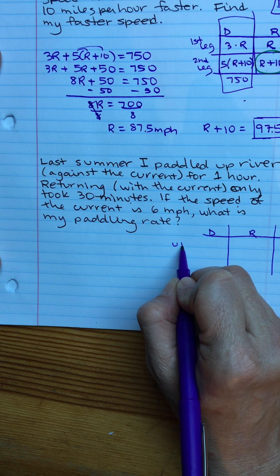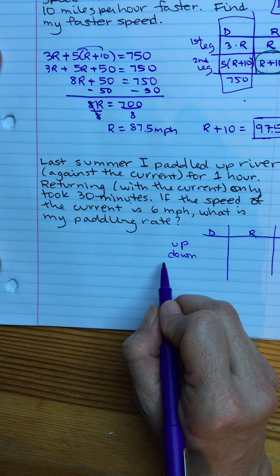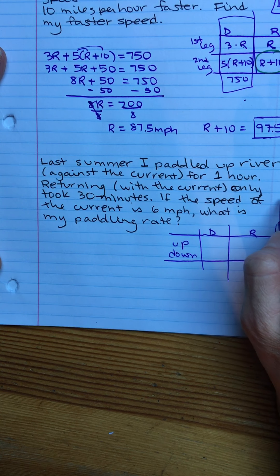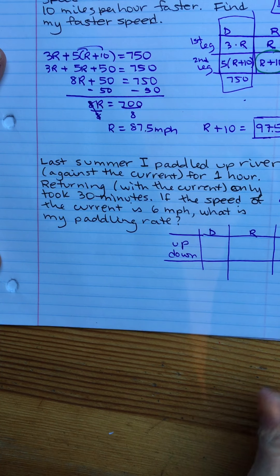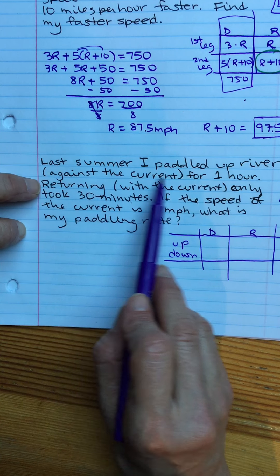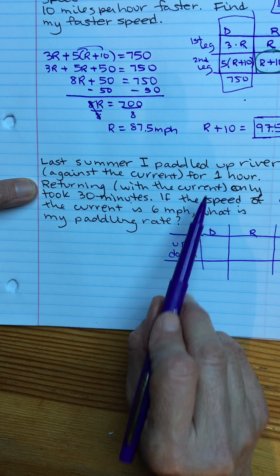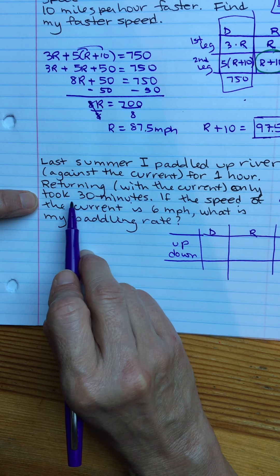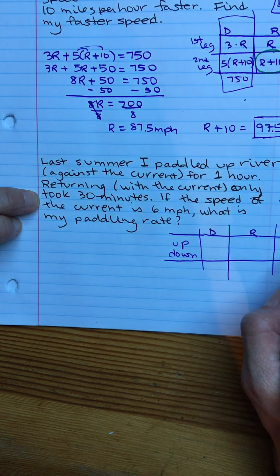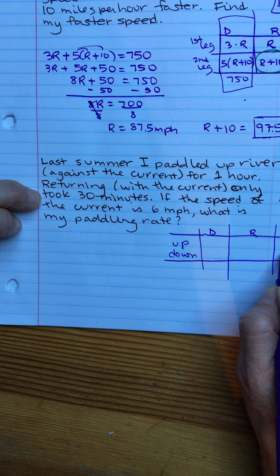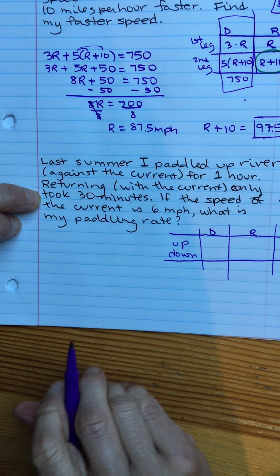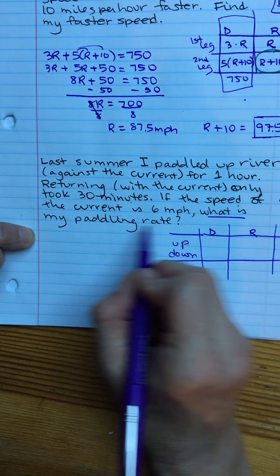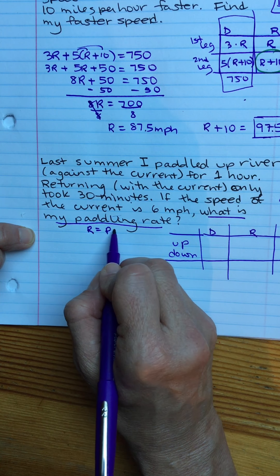The two things I've got going on now is up river and down river. So I have my table set up. Distance equals rate times time to remind me. Let's read again. Paddled up river against the current for one hour, so one hour in my time up. And returning only took 30 minutes. I'm going to change that 30 minutes into hours, so that'll be a half. The speed of the current is six miles per hour. What is my paddling rate? So there's my unknown. That's R. R equals my paddling.